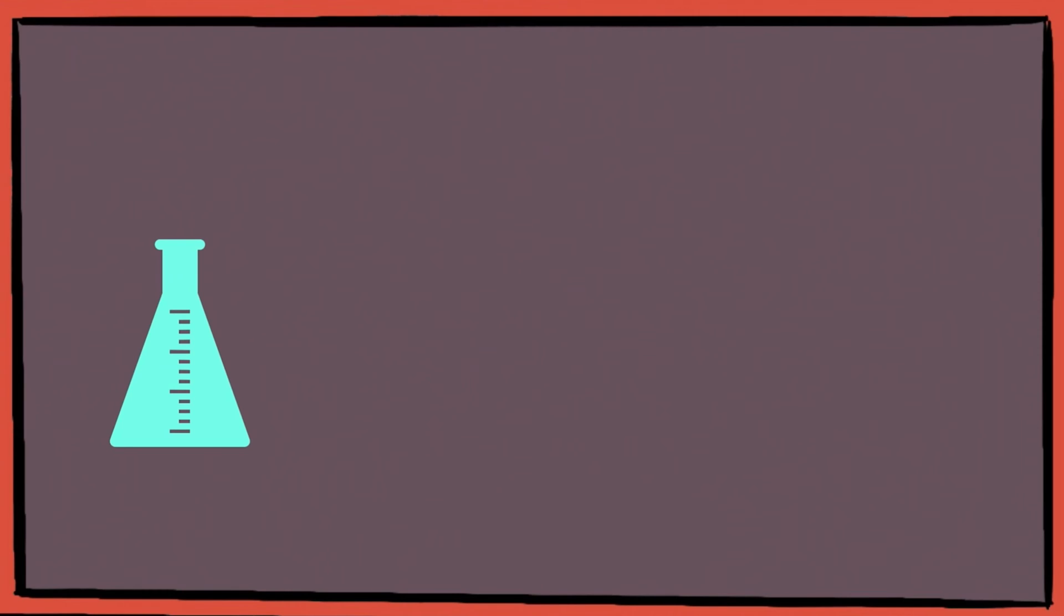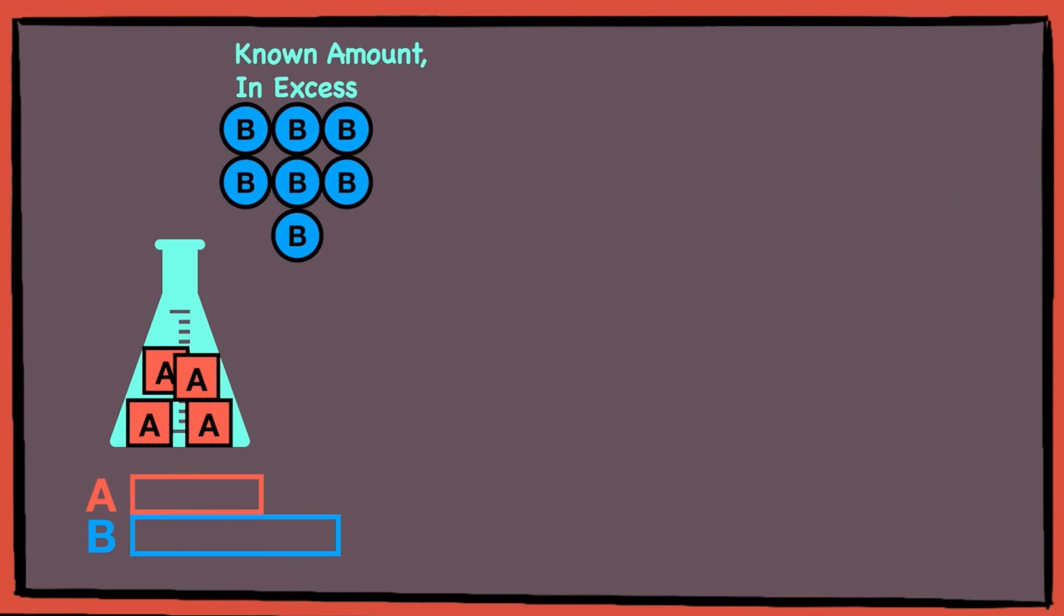Firstly, a solution of an unknown amount, which we're going to call the analyte, which I'm just going to label as A, is poured into a conical flask. Then, a known amount of excess reagent, which I'm going to label as B, is then poured into the conical flask to react with A.